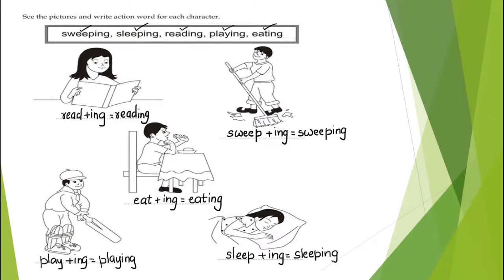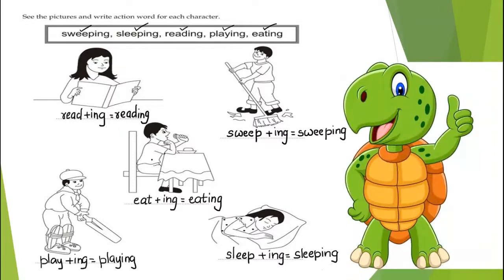So in this exercise, children, you have learned five new action words: reading, sweeping, eating, playing, and sleeping. Let's move to the next exercise.